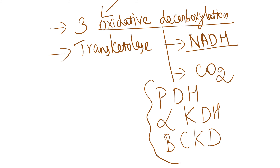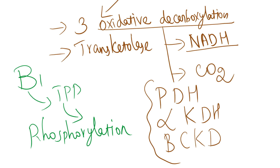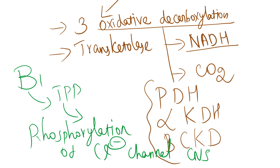There is a new thing given in Harper: vitamin B1, that is thiamine pyrophosphate, is also needed for phosphorylation of a chloride channel in the brain. Phosphorylation of the chloride channel in the brain requires B1.